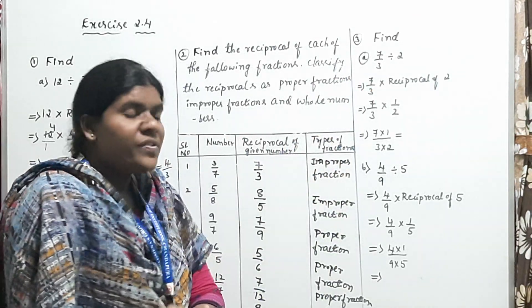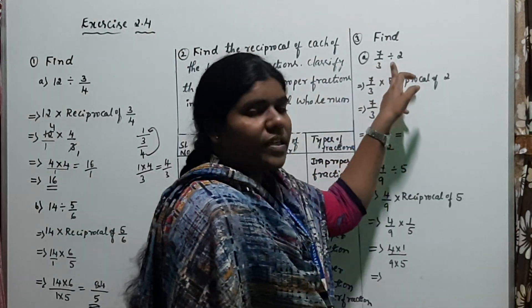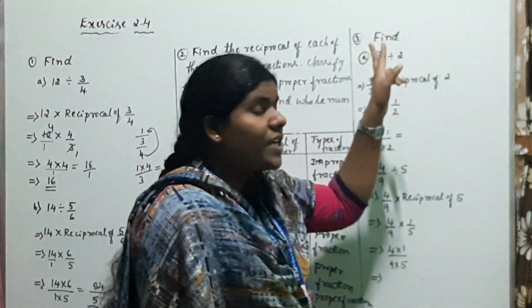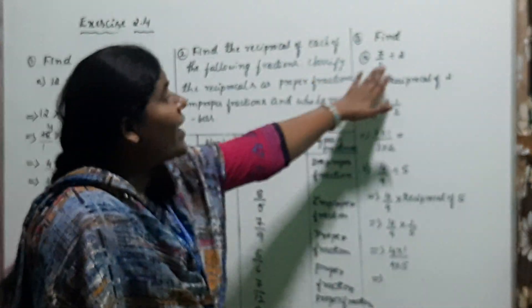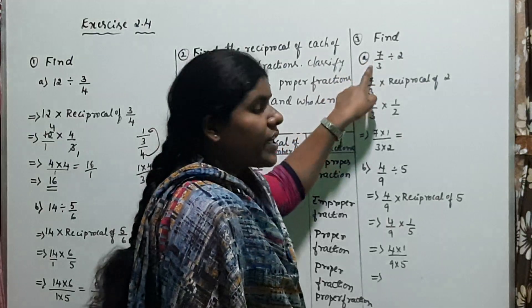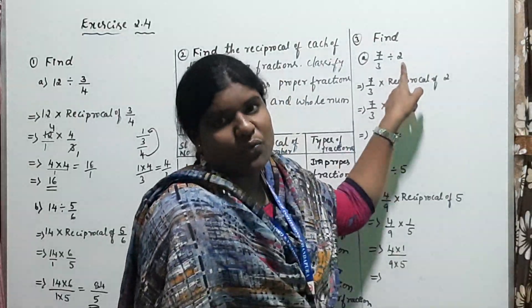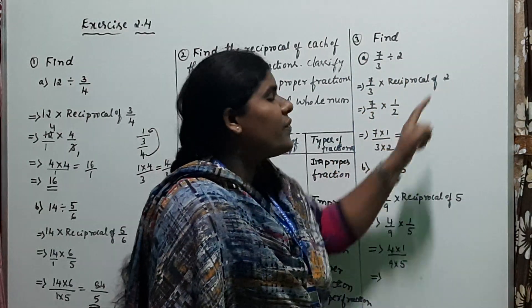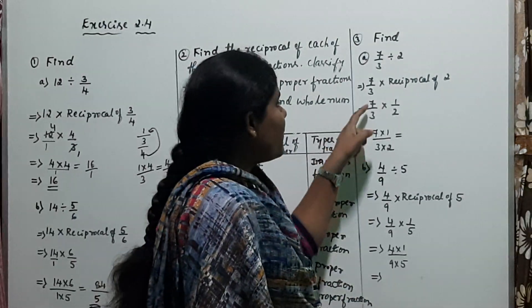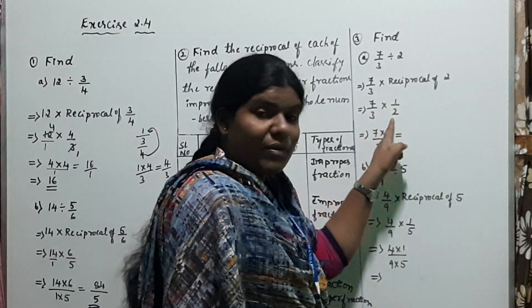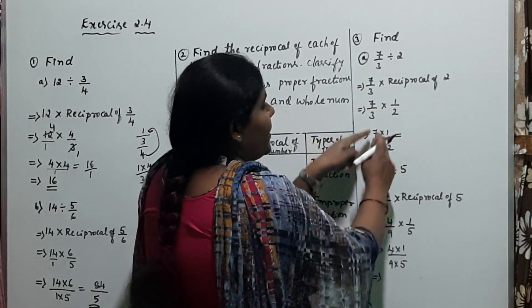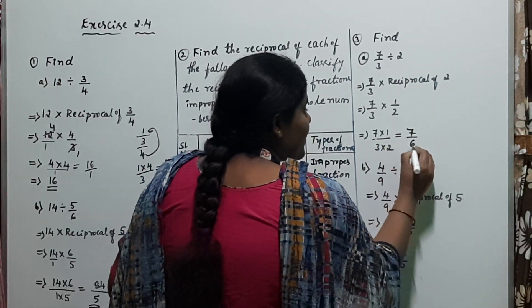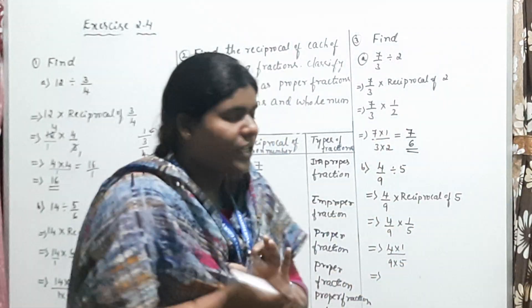Moving on to the third problem: find 7/3 divided by 2. This is division of a fraction by a whole number. Here, 7/3 is the fraction and 2 is the whole number. Keep 7/3 as it is and write the reciprocal of 2, which is 1/2. So 7/3 multiplied by 1/2 equals 7 times 1 divided by 3 times 2 — that is 7 divided by 6. The final answer is 7/6.